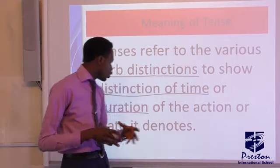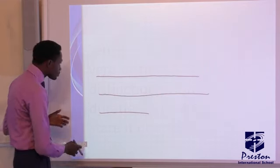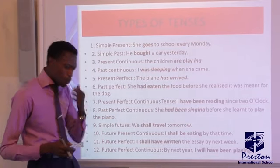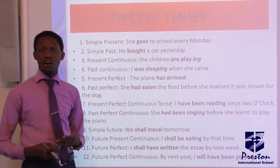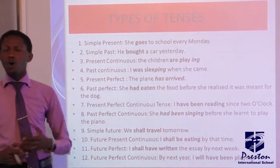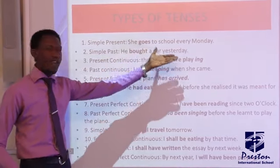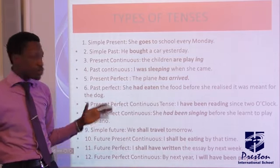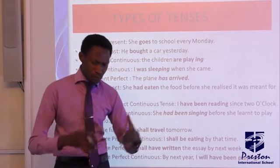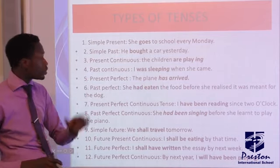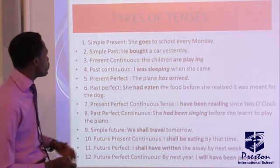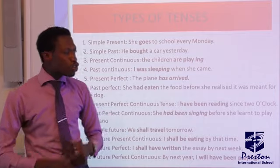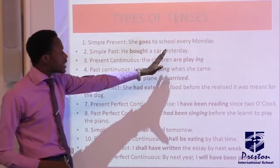By the end of this lesson, you should be able to give the meaning of tenses, mention and write the different tenses, use verbs in correct tenses, and write an essay with appropriate tenses. The forms verbs take show time and the duration within which an action took place. Simple present refers to an action that is habitually carried out, something that happens often, or a universal truth or fact — for example, 'She goes to school every day' or 'Fish swim in water.' Simple past means an action that took place in the past and has been completed — for example, 'He bought a car yesterday.'